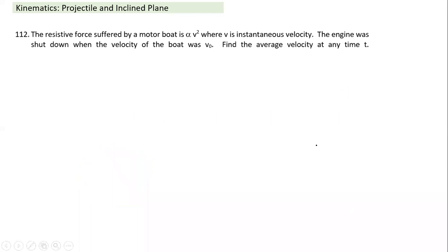Good afternoon. Let's start with this question. This is a common phenomenon: any vehicle propelled by a machine — the moment you switch off the machine, the propelling force stops and the resistive force keeps acting. Here the resistive force is taken to be proportional to the square of velocity. At shutdown, the initial velocity was v-naught. Find the average velocity at any time t.